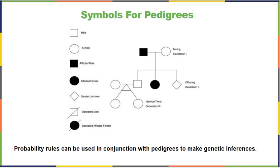When you see the diamond shape, it means that that individual's gender is biologically unknown. That can mean you knew there was another sibling but don't know anything about them, or that there was a miscarriage and that baby was lost before biological sex was determined. If the shape has a diagonal line through it, that shows you that that individual has passed away.